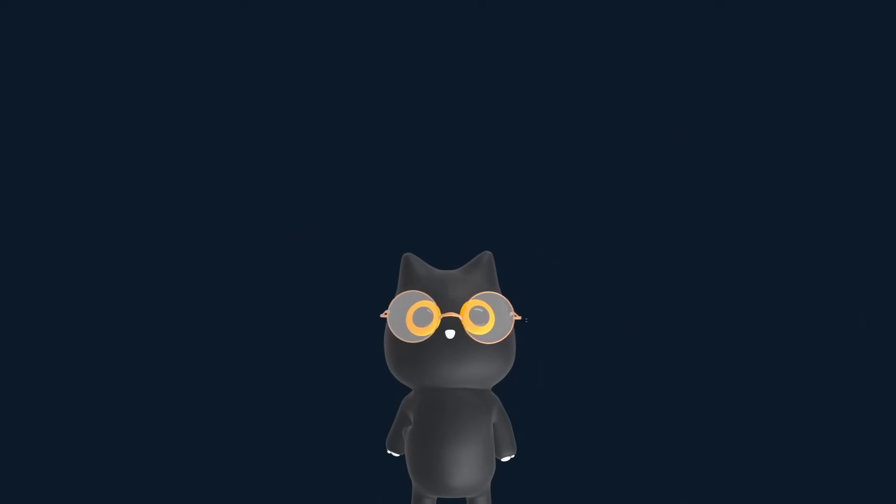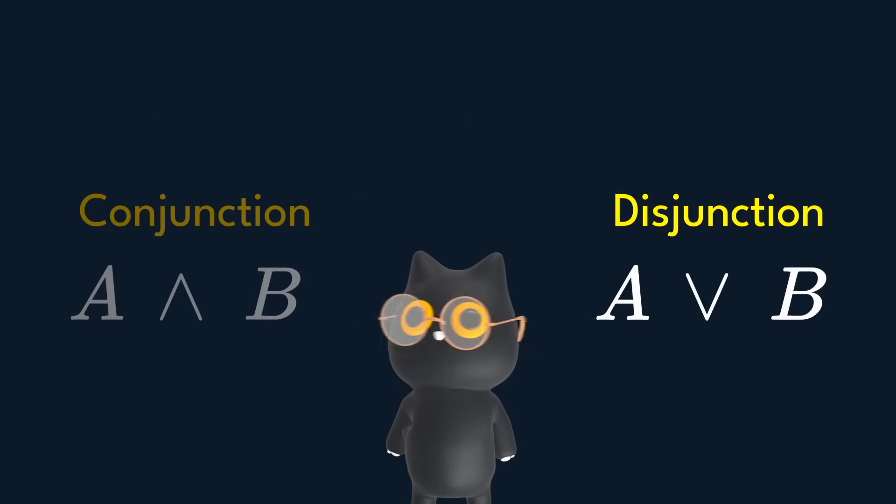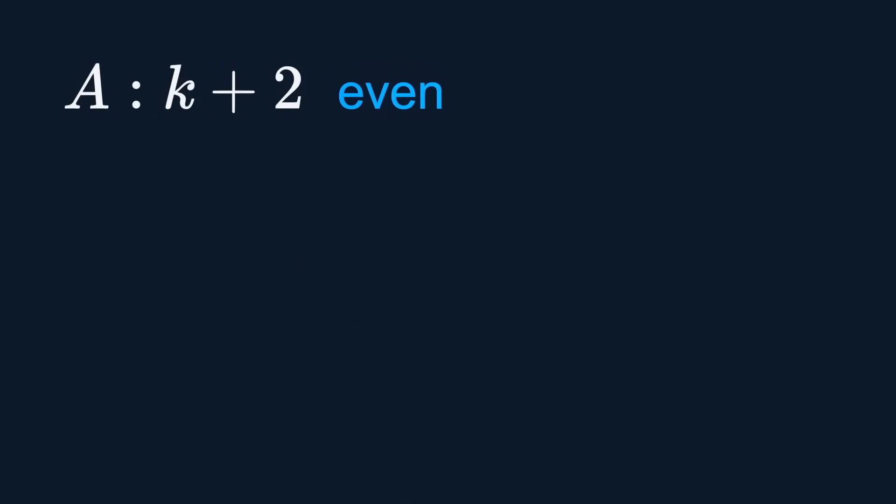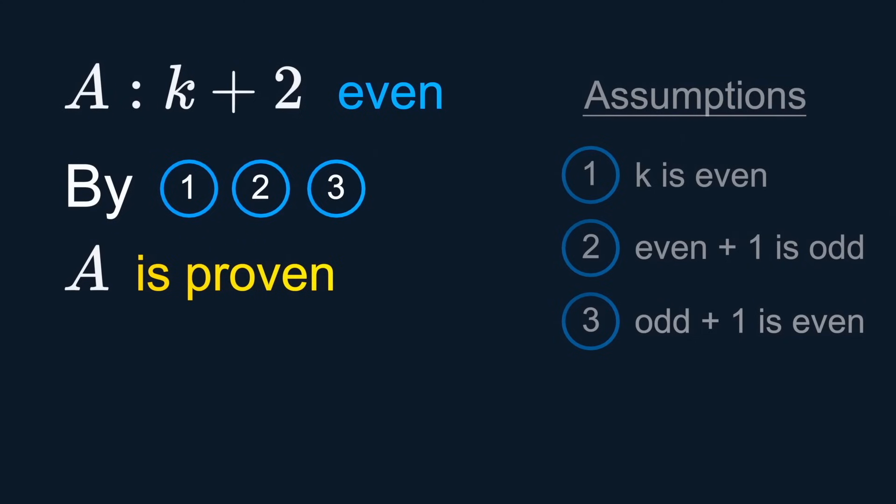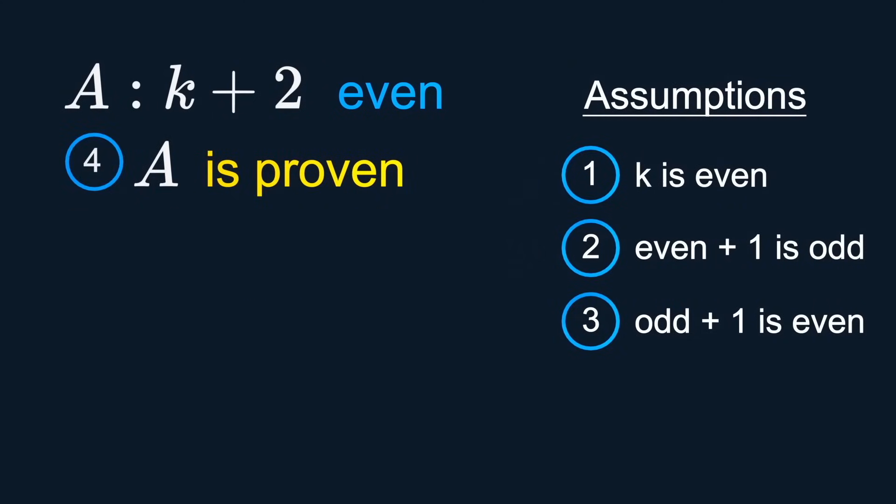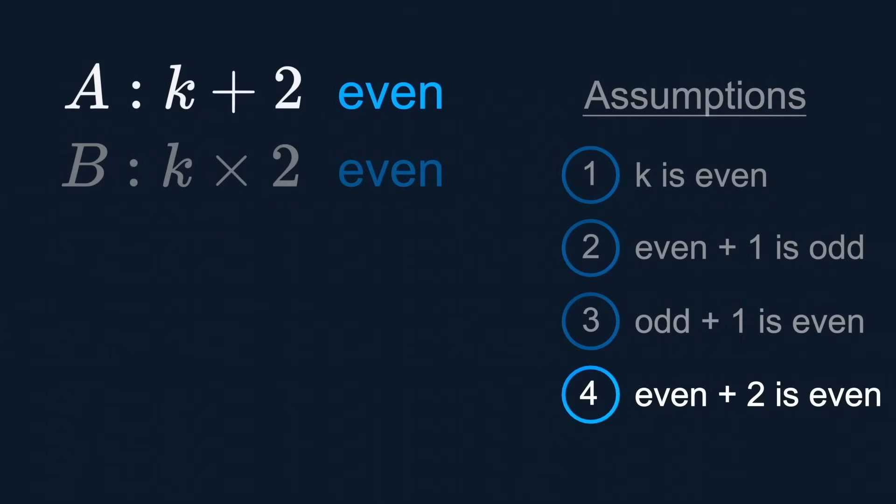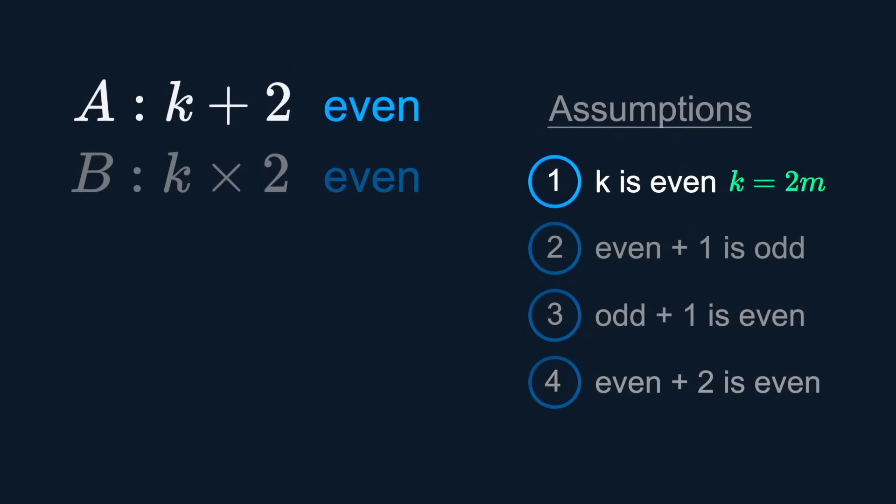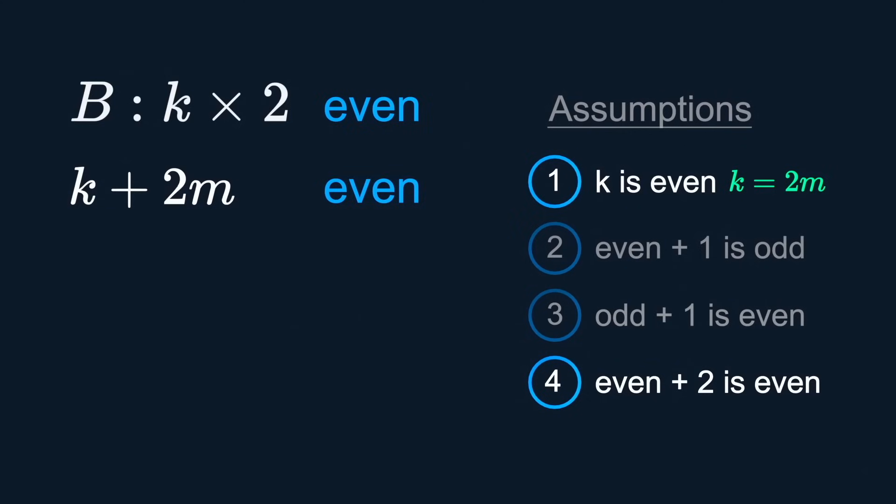We can also prove things like conjunction and disjunction. For conjunctions, we first prove for A that k plus 2 is even using a set of assumptions. Then, using the same set of assumptions and anything we gain from the proof above, we prove B. So by A, we know k plus 2 is even. Since k is even, k equals 2m. We know that when we start with k and use statement for m times, we still get an even number. And just like that, we have proved B too.